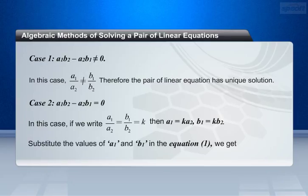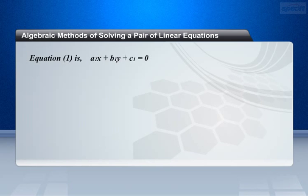Substitute the values of a1 and b1 in equation 1: a1 x plus b1 y plus c1 equals 0. We get k a2 x plus k b2 y plus c1 equals 0. This implies that k into a2 x plus b2 y plus c1 equals 0.